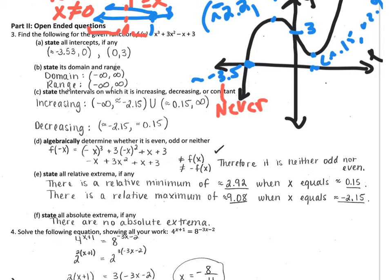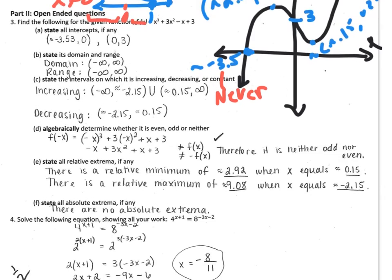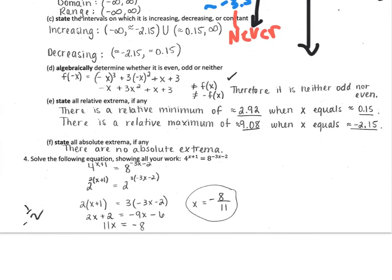When there are no absolute extrema, you need to say so. This graph goes forever down and forever up, and so yes, you have no absolute extrema here.